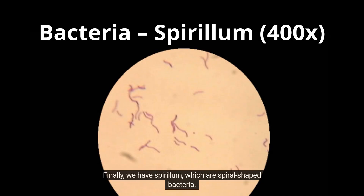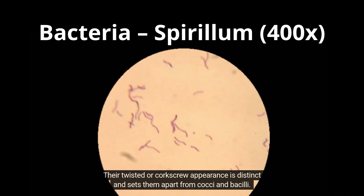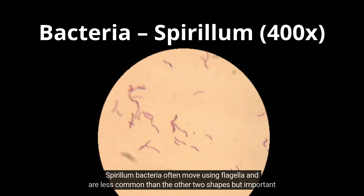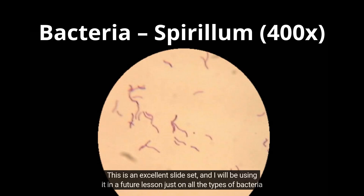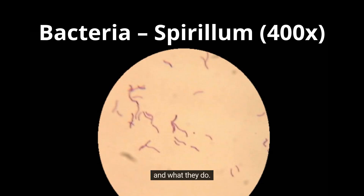Finally, we have spirillum, which are spiral-shaped bacteria. Their twisted or corkscrew appearance is distinct and sets them apart from cocci and bacilli. Spirillum bacteria often move using flagella and are less common than the other two shapes, but important to recognize. This is an excellent slide set, and I will be using it in a future lesson just on all the types of bacteria and what they do.